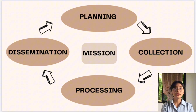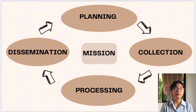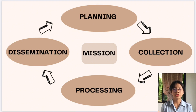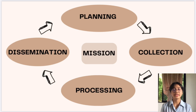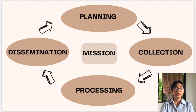Next is collection. This is the stage that involves the gathering of information and data from different sources — such as human intelligence, signal intelligence, imagery intelligence, open source intelligence, and others — to gather data in order to prove or administer justice.